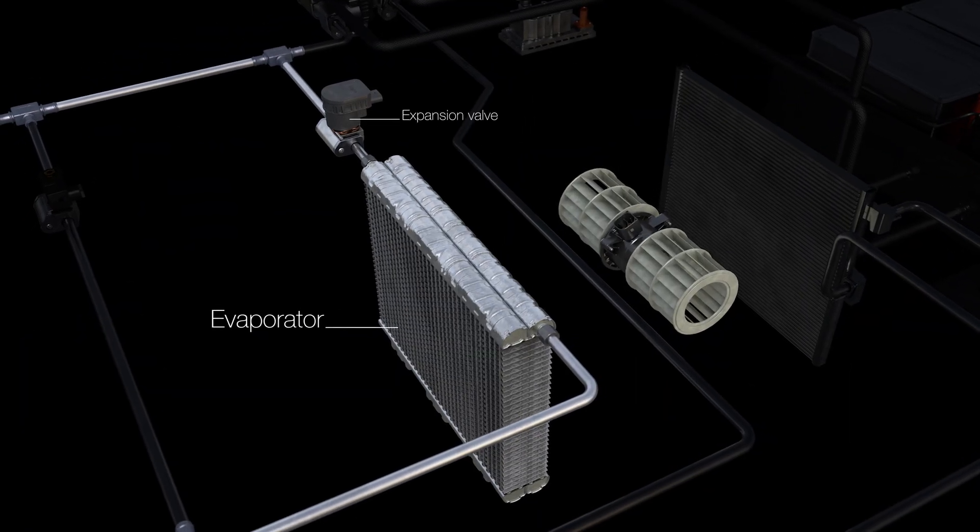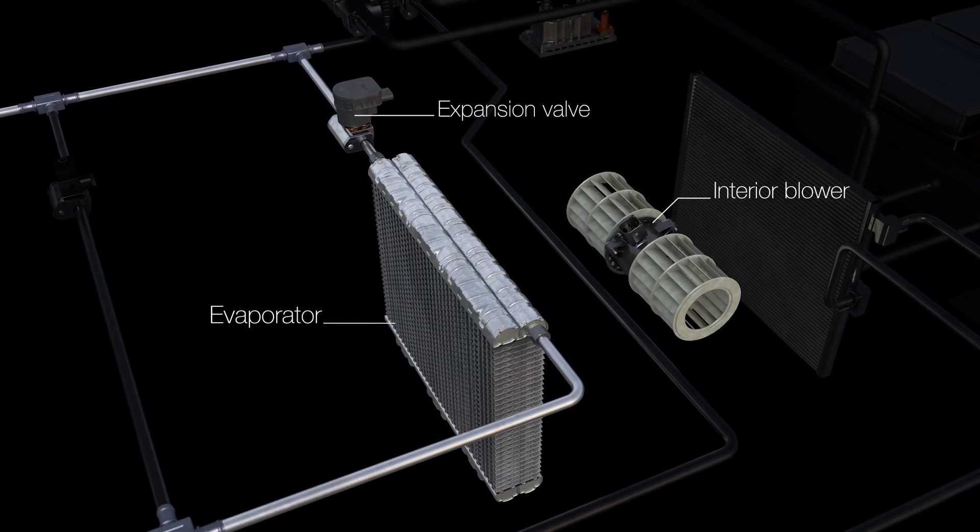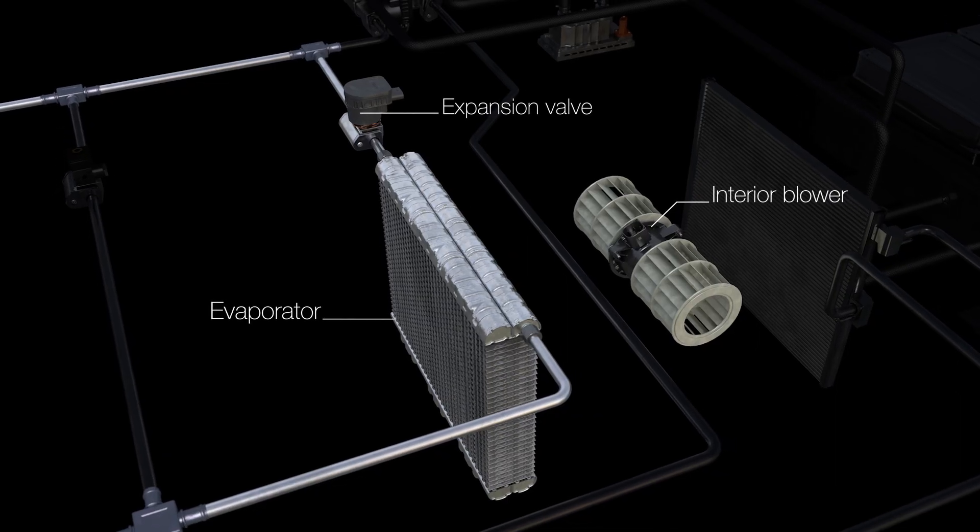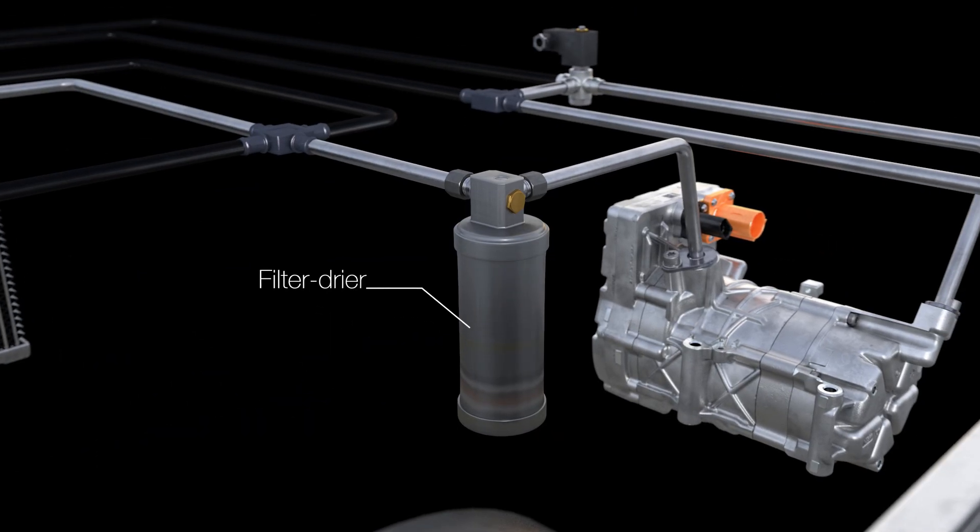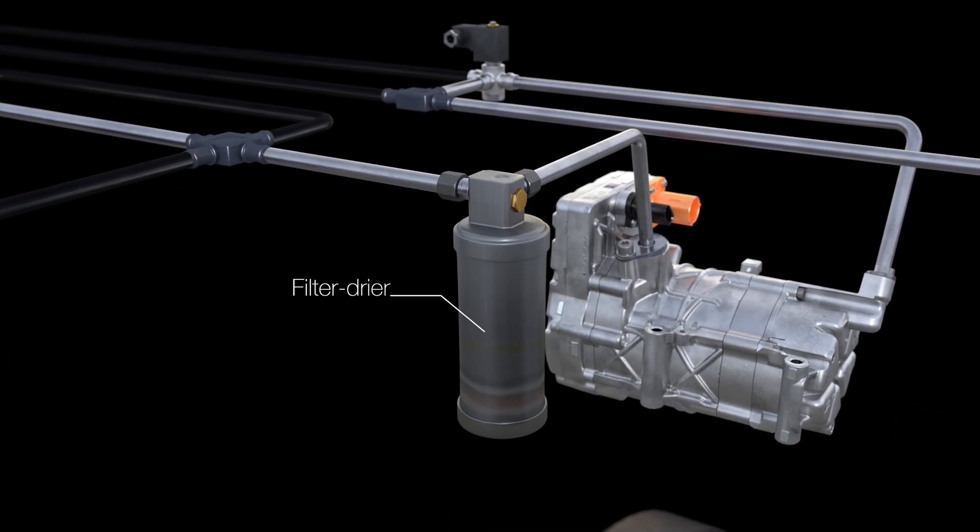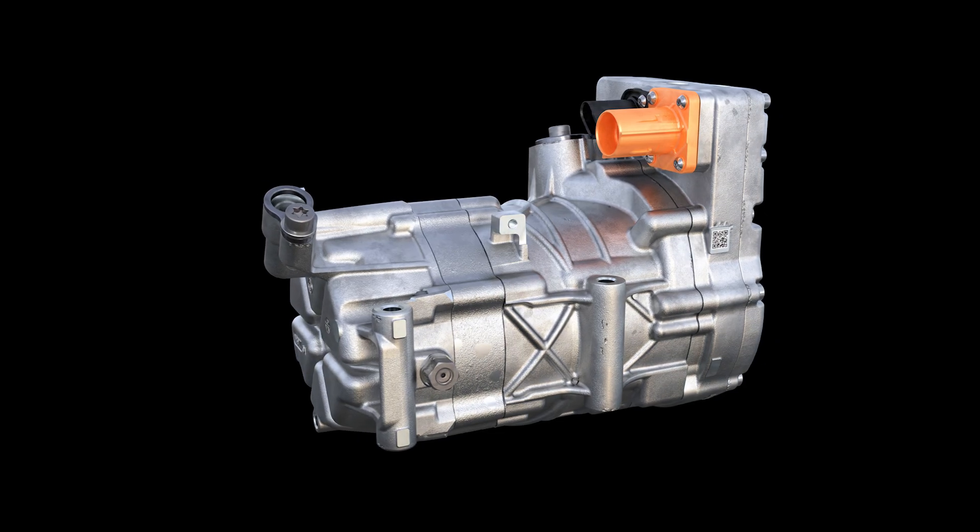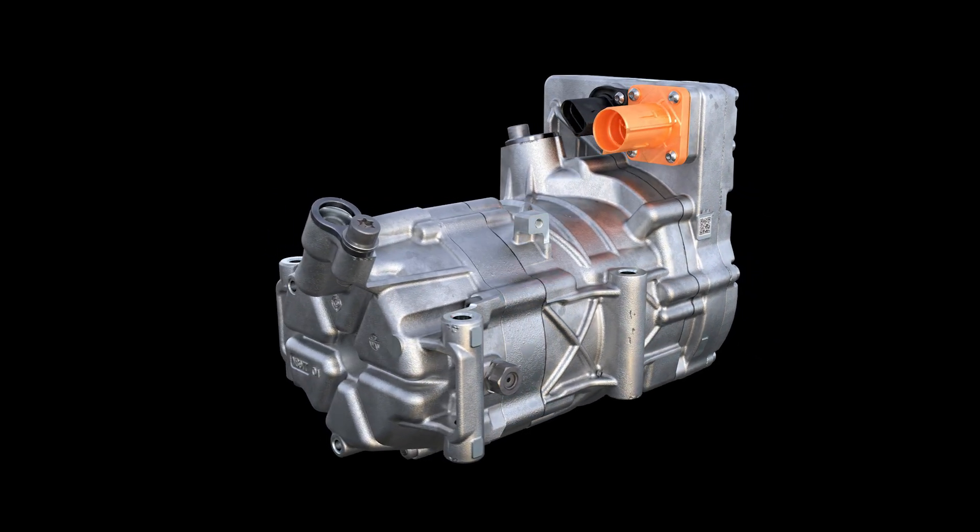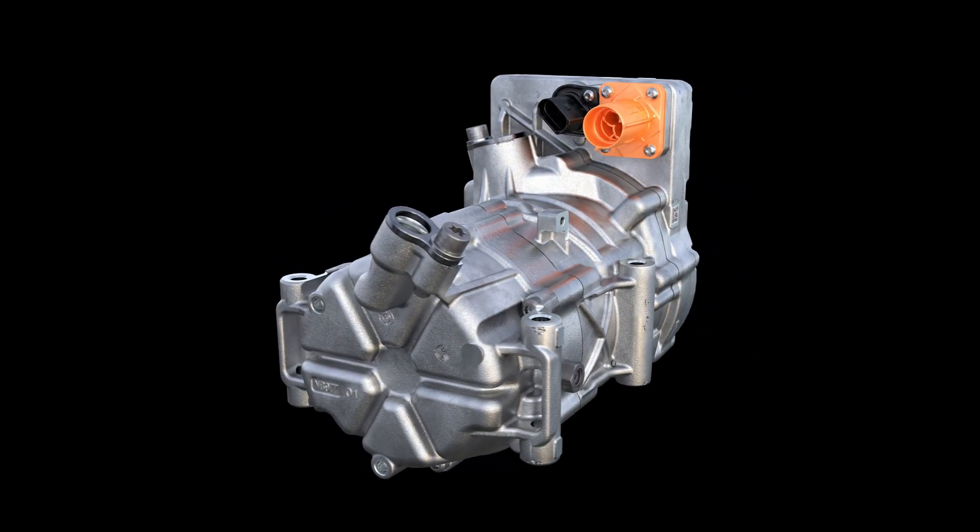The evaporator, expansion valve, and interior blower are usually installed in the air tank. The refrigerant is fed through the filter dryer and back to the air conditioning compressor. In electric vehicles, an electrically driven air conditioning compressor is used because there is no belt to drive it.